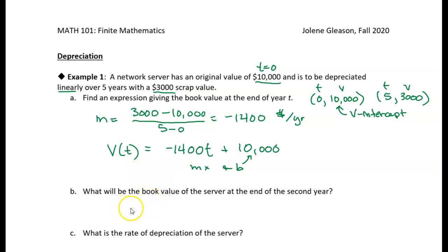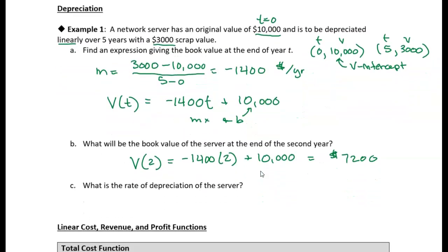Alright, so what will the book value be of the server at the end of the second year? So what I want to find is the value when t is equal to 2. So I'm going to replace t with 2. That'll be the input to my function. So I'm going to take negative 1,400 times my t value and then add 10,000 to it to get my value after two years. And when I do that, I get $7,200. That's just by substituting the value t equals 2 into the equation.